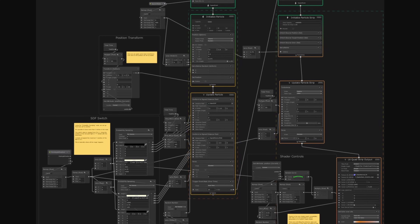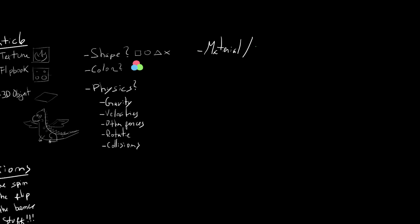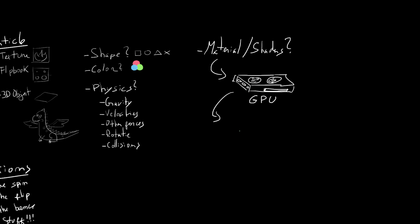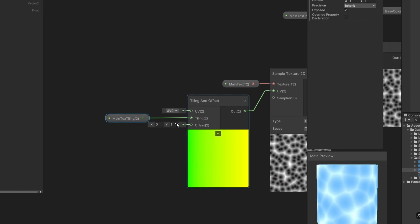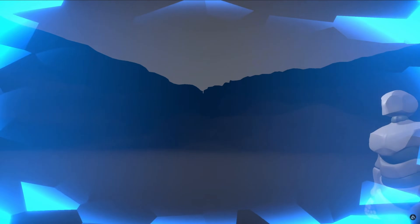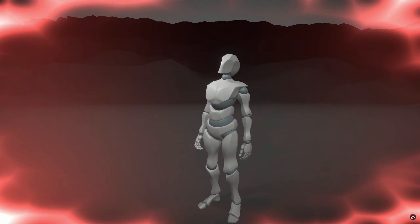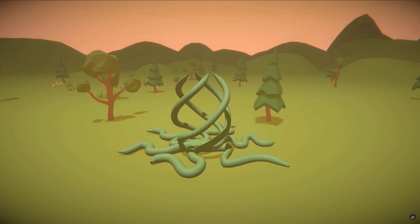All particle systems need a material. A material is a shader. And a shader is a little program that runs on your graphics card, that tells it how to render pixels on your screen. Shaders can do all sorts of things, from simple text scrolling, to a full screen effect, or even mesh distortion.